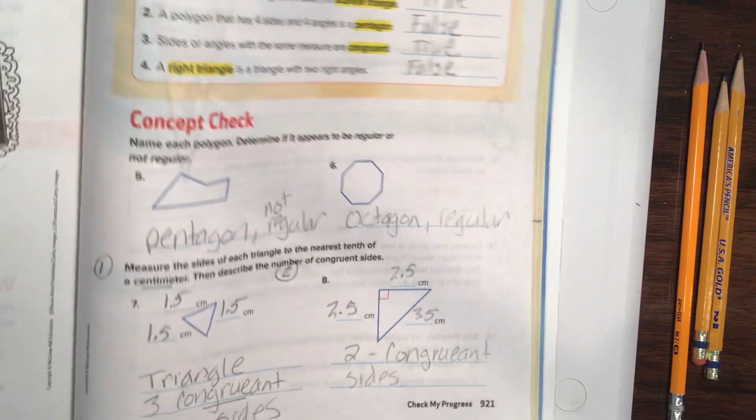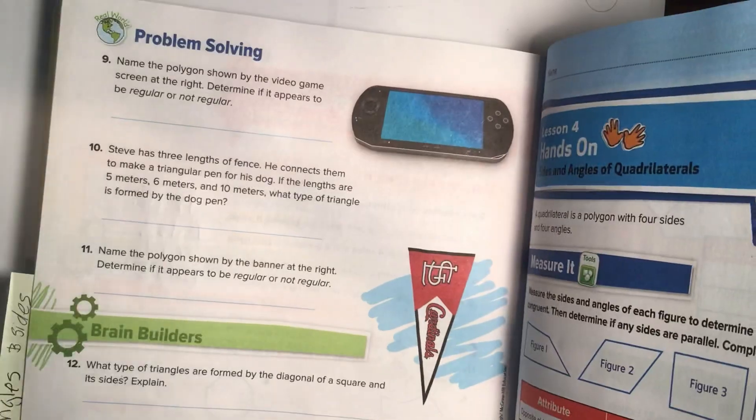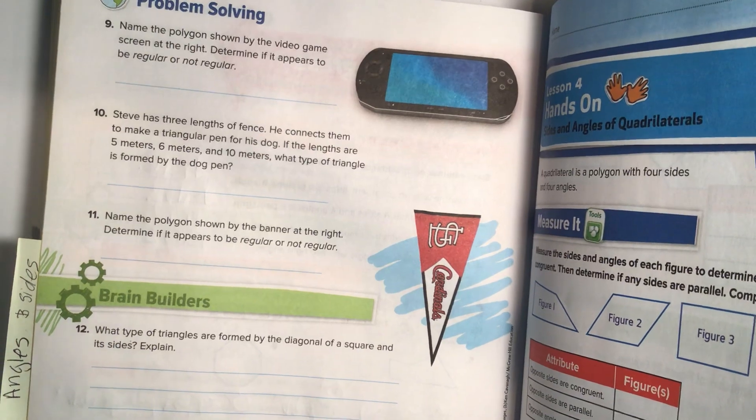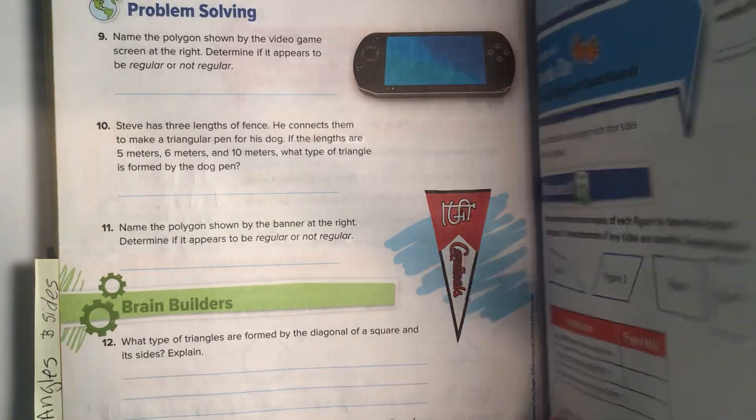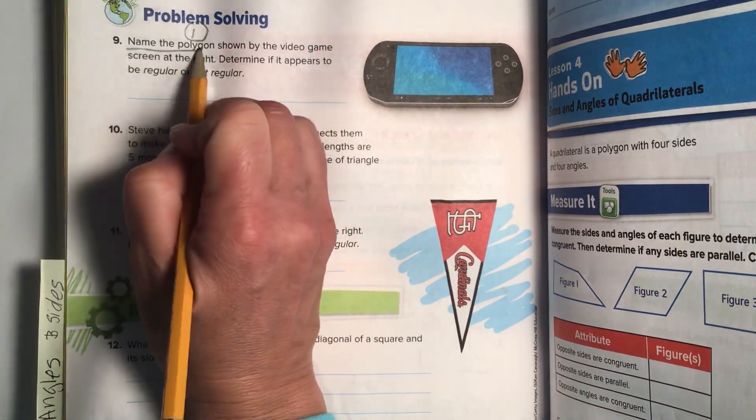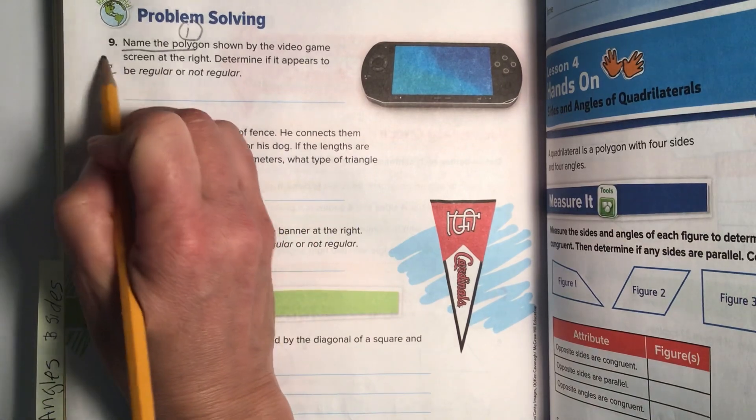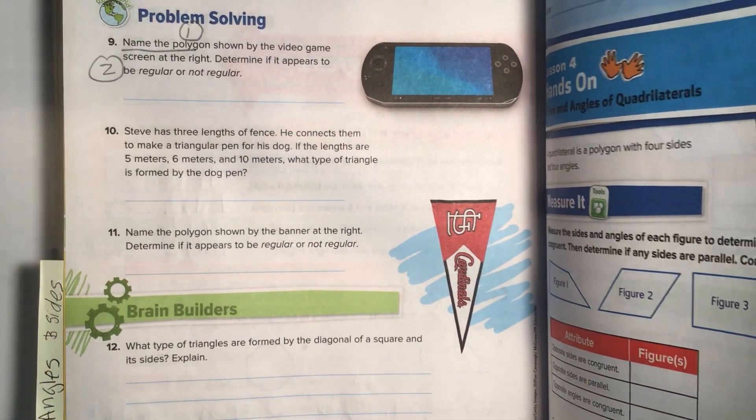Okay, so that finishes 921. Let's go over to 922. Alright. Name the polygon shown by the video game screen at the right. Determine if it appears to be regular or not regular. Alright, so two things that they want us to do here. One, they want us to name the polygon. And two, they want us to determine if it's regular or not regular. So we're going to need two answers for this.